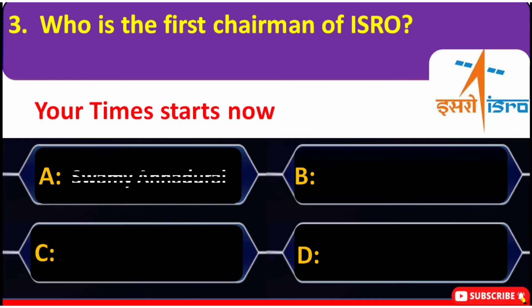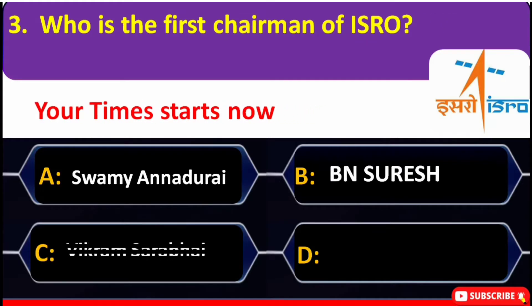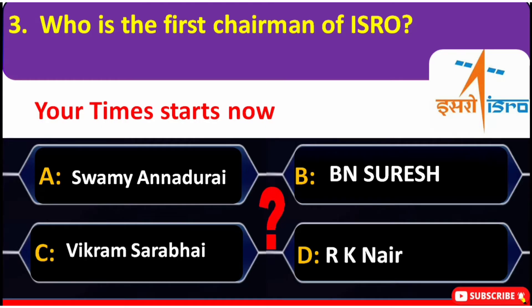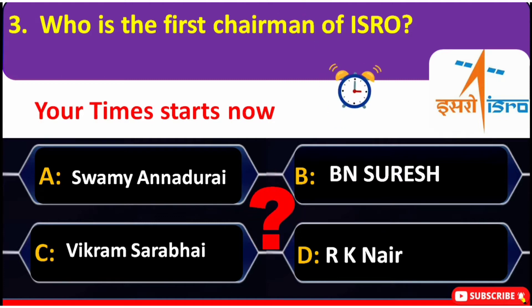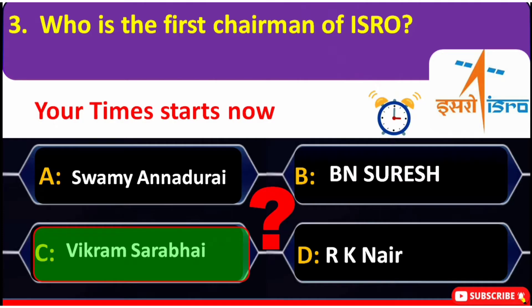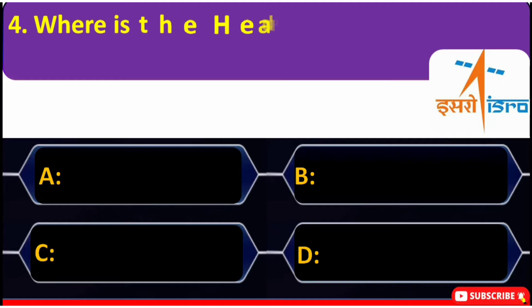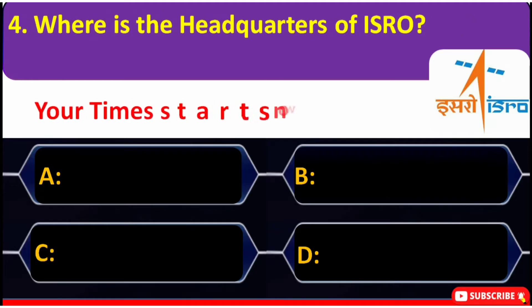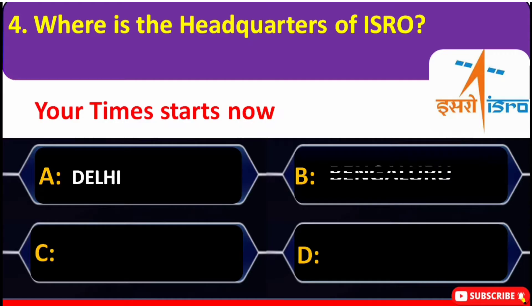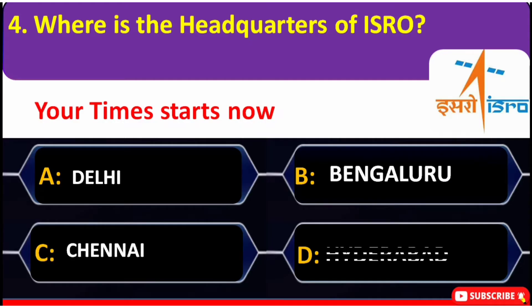Who is the founder of ISRO? The options include R. K. Nair and others. Correct answer is C — Vikram Sarabhai, the father of the Indian Space program. Where is the headquarters of ISRO located? A. Delhi, B. Bengaluru, C. Chennai, D. Hyderabad.